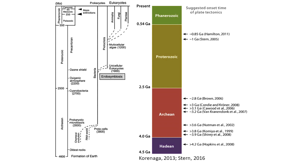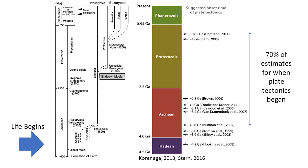We know that Earth's life and tectonics influence each other. Life on Earth began sometime before 3.8 billion years ago, but we are more uncertain about when plate tectonics began. Estimates range from the Hadean to the Neoproterozoic. Because 70% of the estimates for when plate tectonics began are younger than 3.8 billion years ago, and because we agree with Warren Hamilton that plate tectonics began in Neoproterozoic time, we will assume that the fuzzy transition occurred after life began. We focus not on what that fuzzy transition was, but on how it accelerated life evolution.